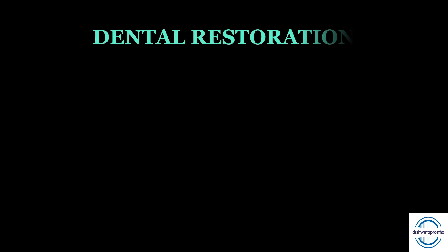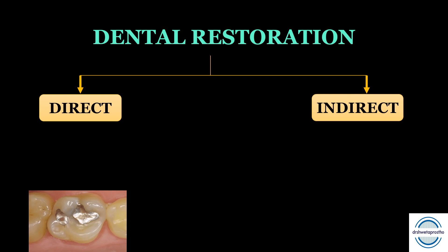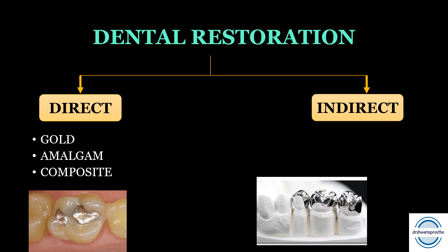A dental restoration can be of two types: direct and indirect. The direct restorations are entirely fabricated and completed directly in the patient's mouth. A cavity is made and in that the direct restorative material is placed — for example, gold, amalgam, dental composites. The indirect restorations are those which are fabricated outside the patient's mouth in the lab, then they are luted or bonded onto the tooth — for example, inlays, onlays, and crowns.